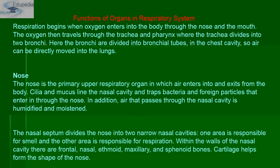Air that passes through the nasal cavity is also humidified and moistened. There is a septum in the nose which divides it into two narrow nasal cavities — one area responsible for smell and the other for respiration. Within the walls of the nasal cavity there are frontal, nasal, ethmoid, maxillary, and sphenoid bones. Cartilage is also present which maintains the shape of the nose.